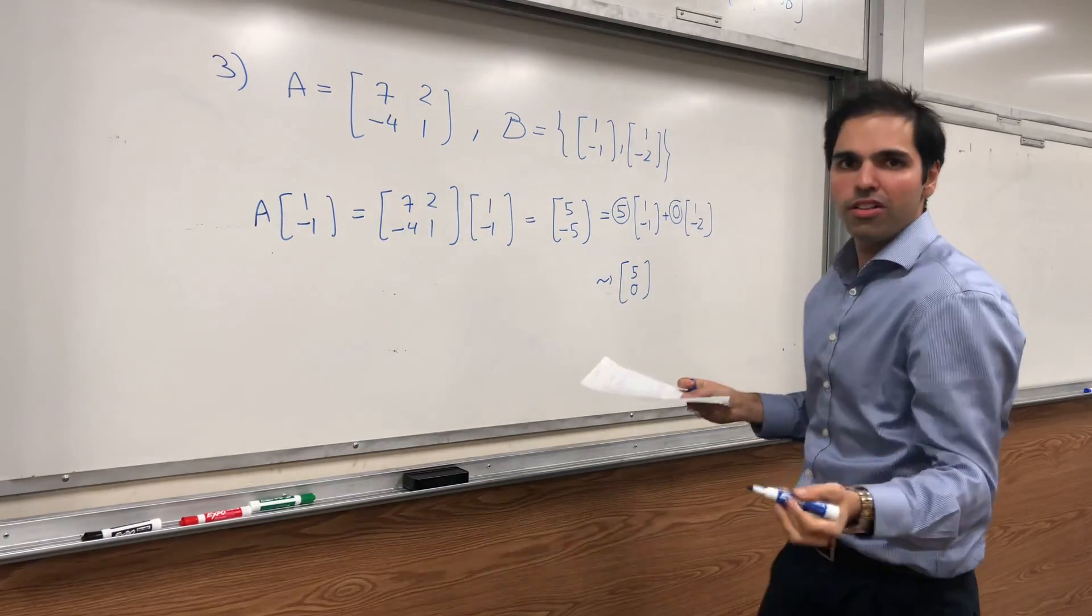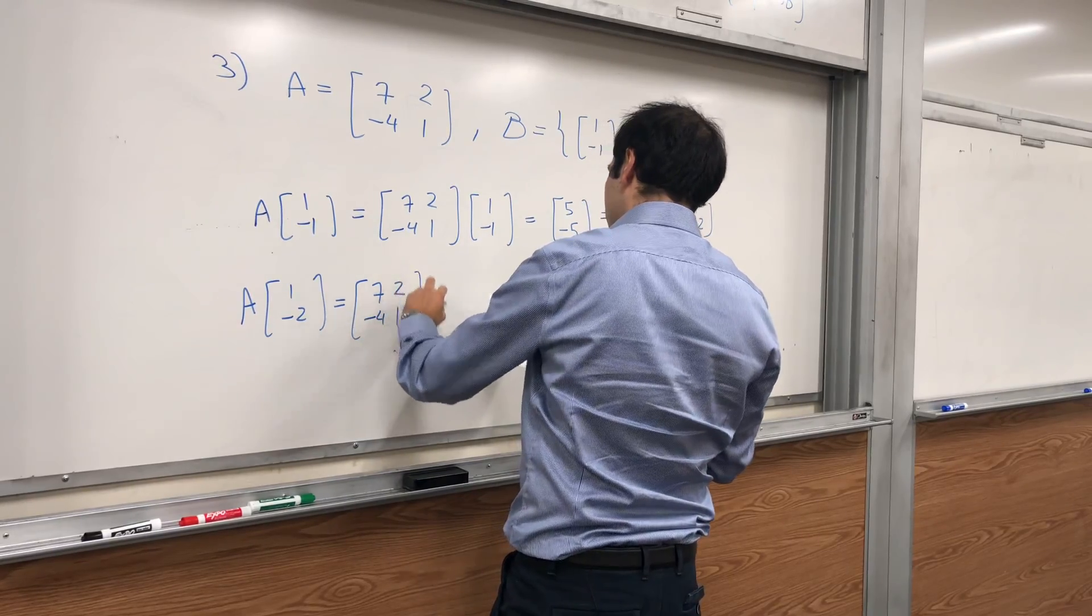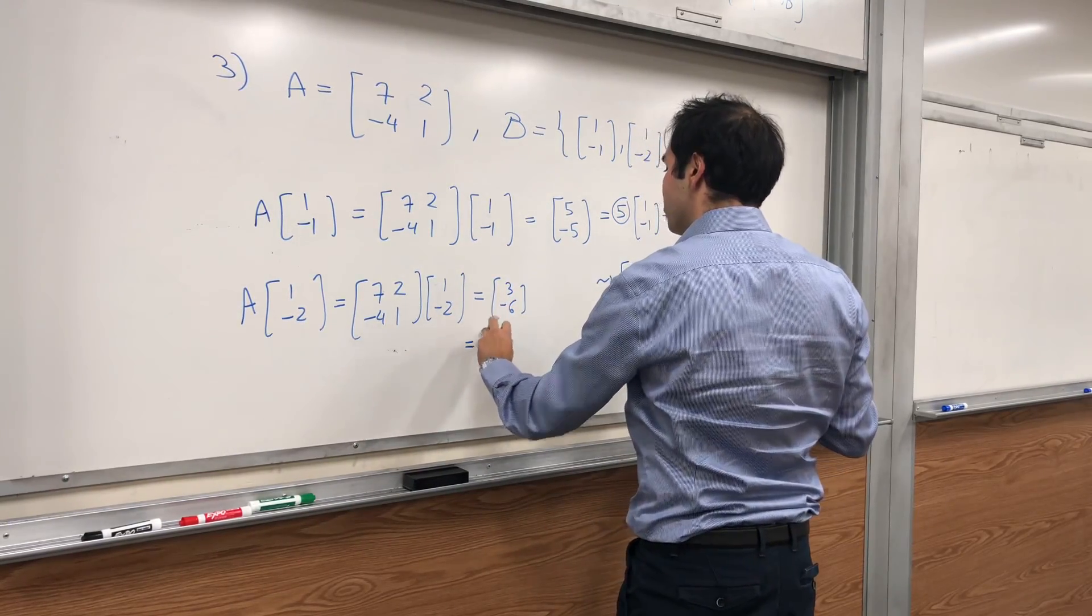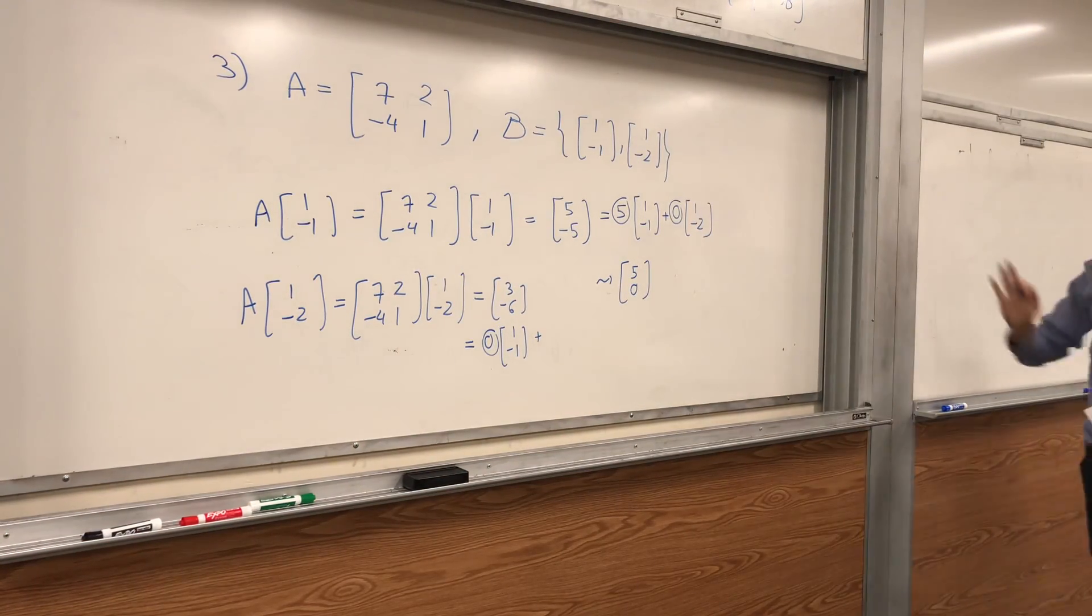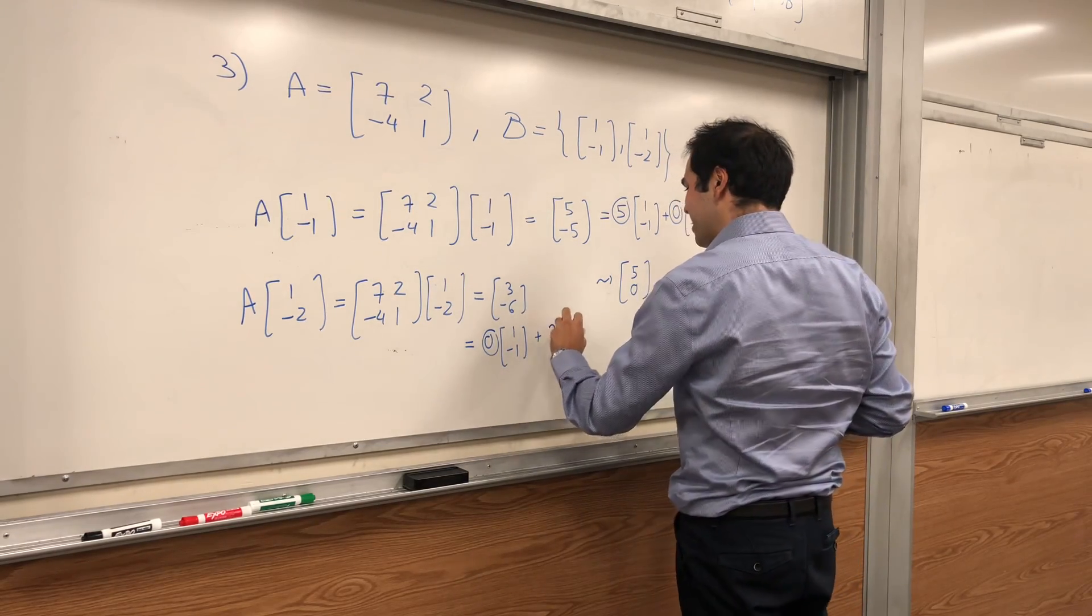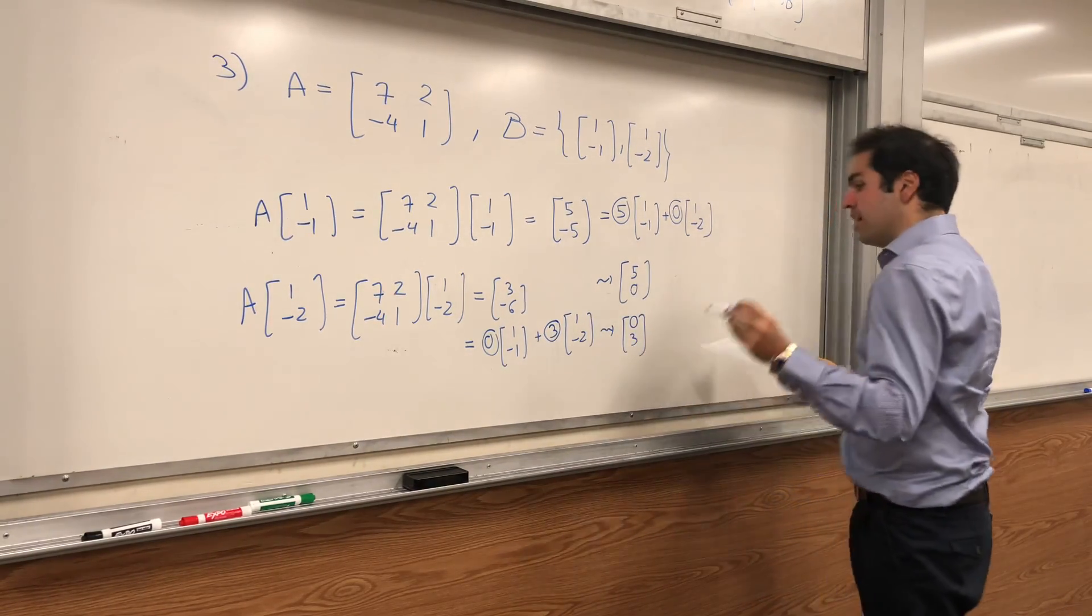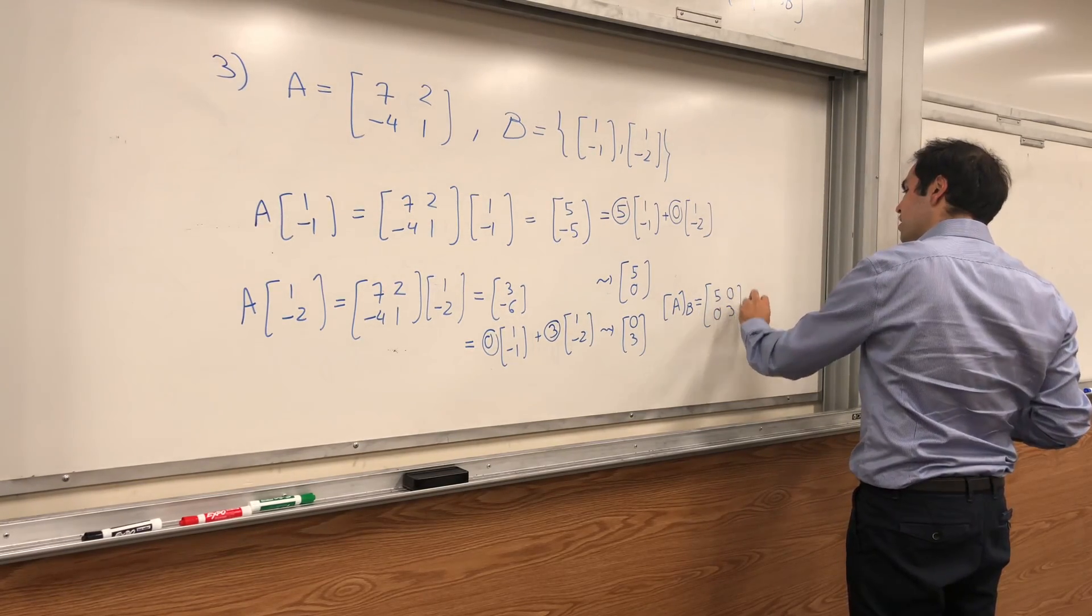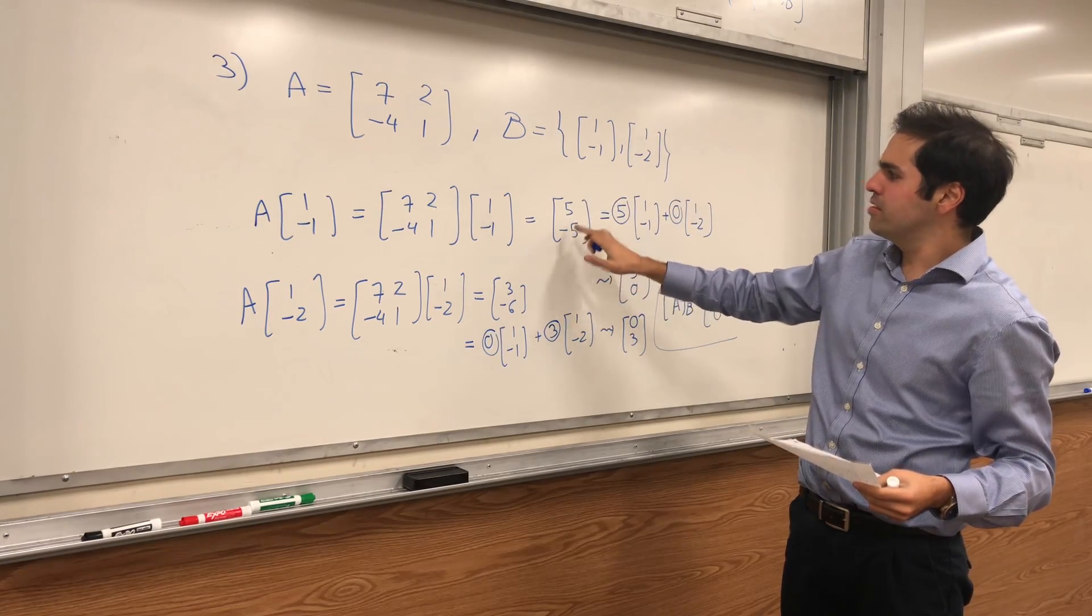And indeed, the column here becomes (5, 0), the first column of the B-matrix. Now A(1, -2), that is [7, -4; 2, 1] of (1, -2), and that's (3, -6). And again, write it in terms of your basis vectors. Oops, one second, not expected. Ah no, 0 times (1, -1) plus 3 times (1, -2), and therefore the second column becomes (0, 3), which means that the B-matrix of A is [5, 0; 0, 3].